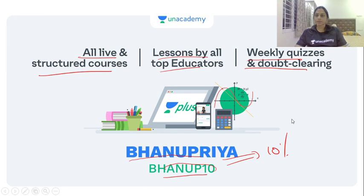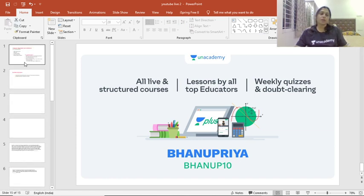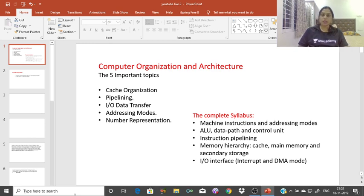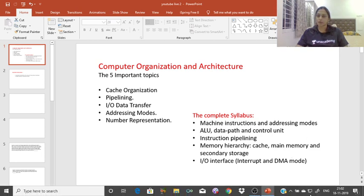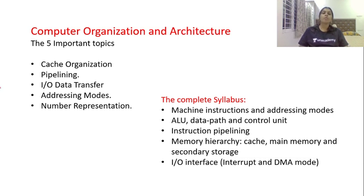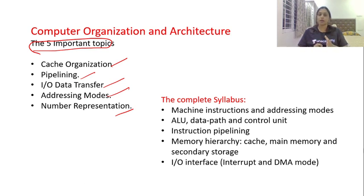Now let's start the class. Today's topic is computer organization — what are the main important concepts that you are going to learn. In computer organization and architecture, there are totally five important topics: cache organization, pipelining, I/O data transfer, addressing modes, and number representation. These are the main concepts where questions come from in the GATE point of view.